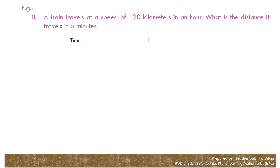Now let's see another example. A train travels at a speed of 120 kilometers in an hour. What is the distance it travels in 5 minutes? Here the two quantities are time and distance. You can represent this data in an arrow diagram. Within 1 hour, that means within 60 minutes, the train travels 120 kilometers. Let's assume the distance traveled within 5 minutes as X kilometers.